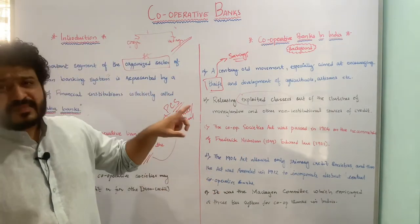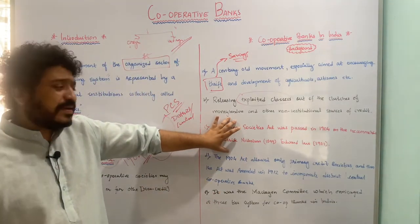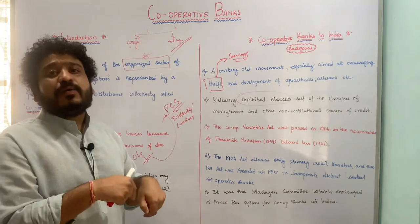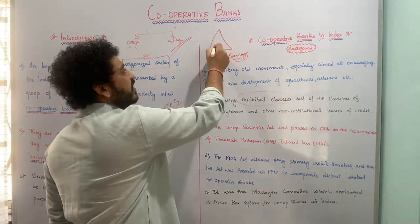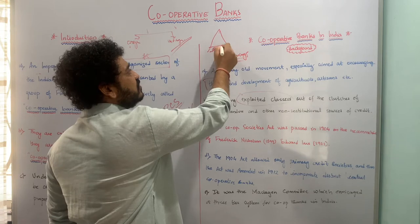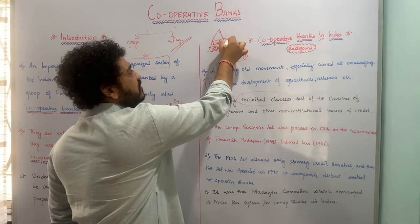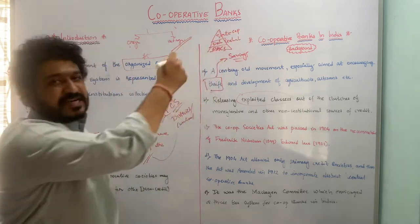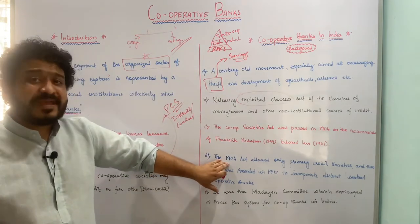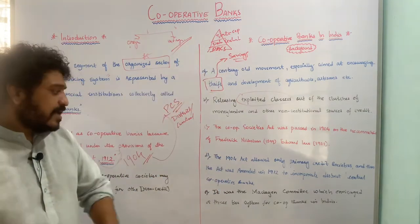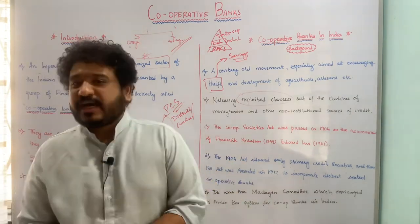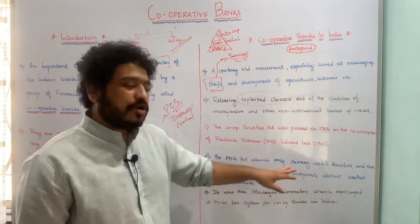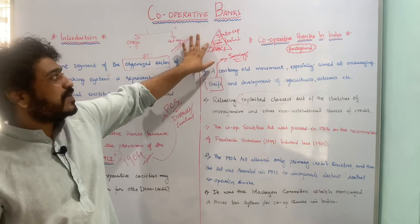The 1904 act allowed only primary credit societies — those at the grass root level. Looking at the structure, we have the primary agricultural credit societies at the base, then the district or central cooperative banks, and then the state cooperative bank at the apex. The 1904 act paved the way for primary credit societies, and the act was amended in 1912 to incorporate district or central level cooperative banks.